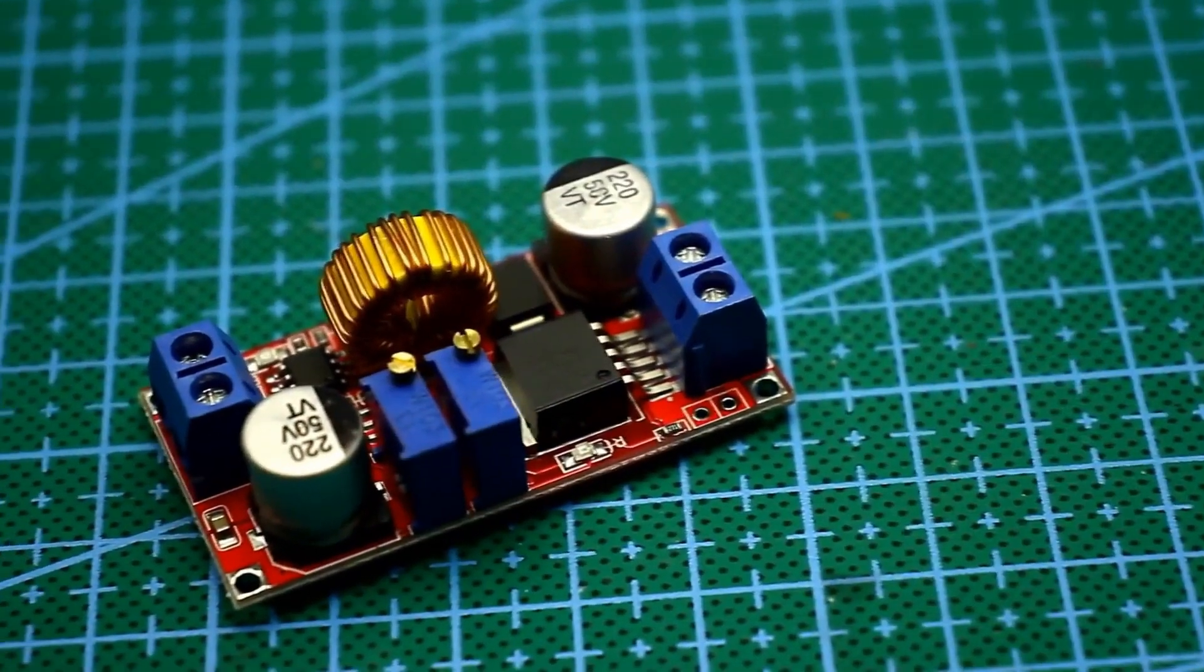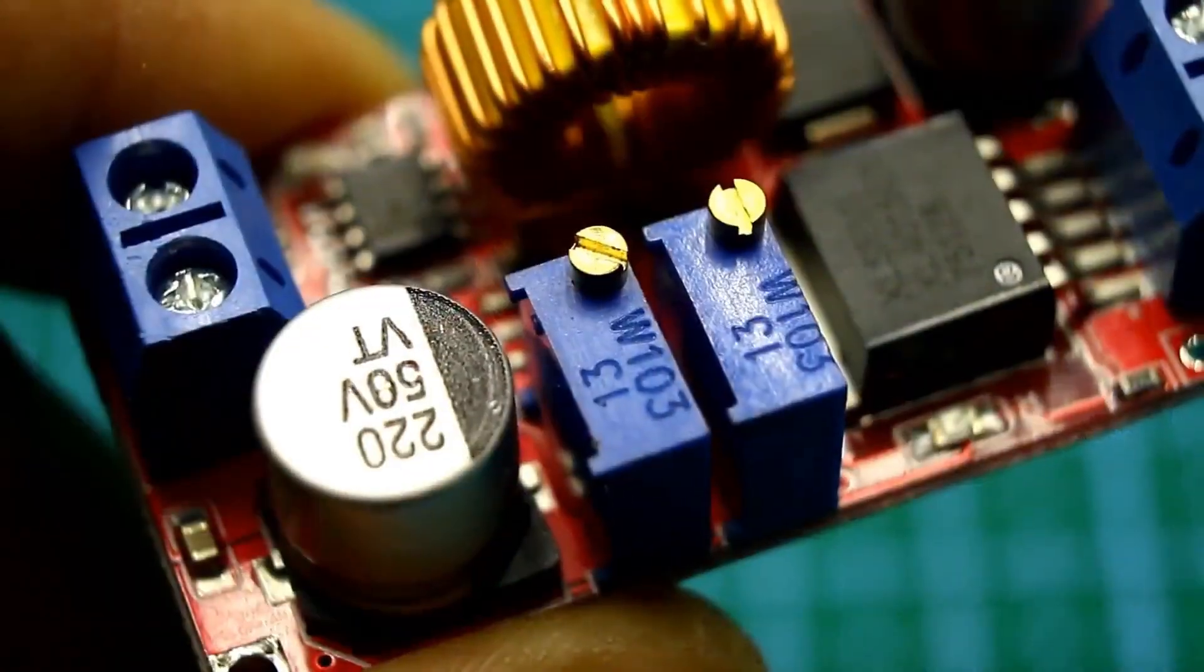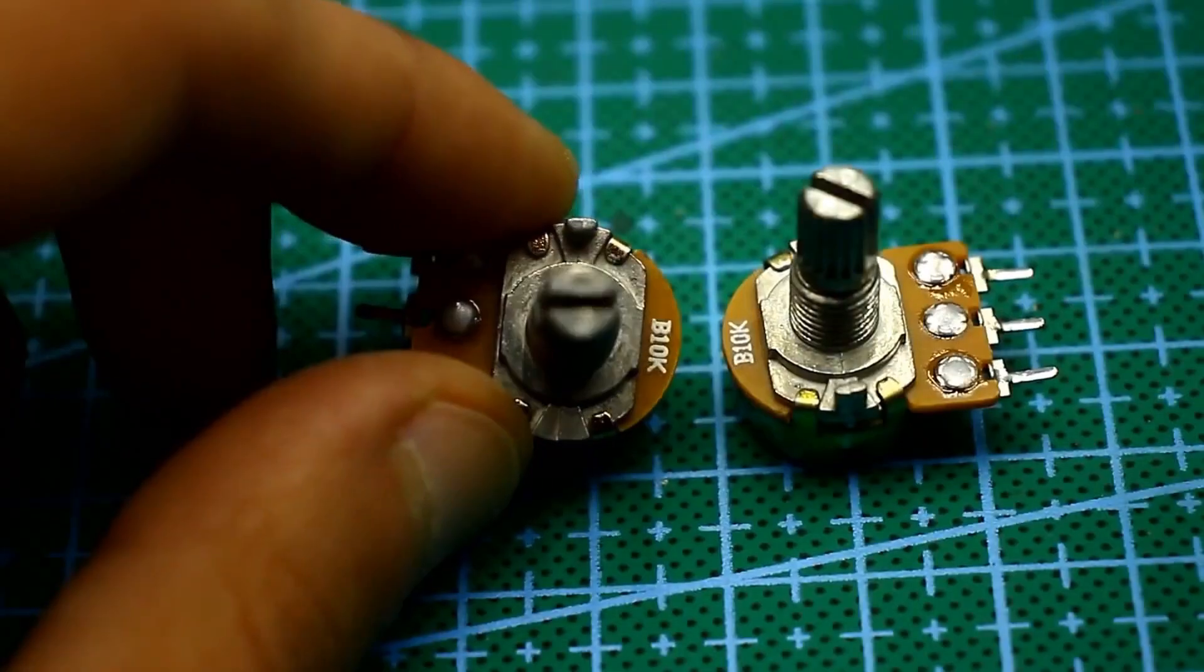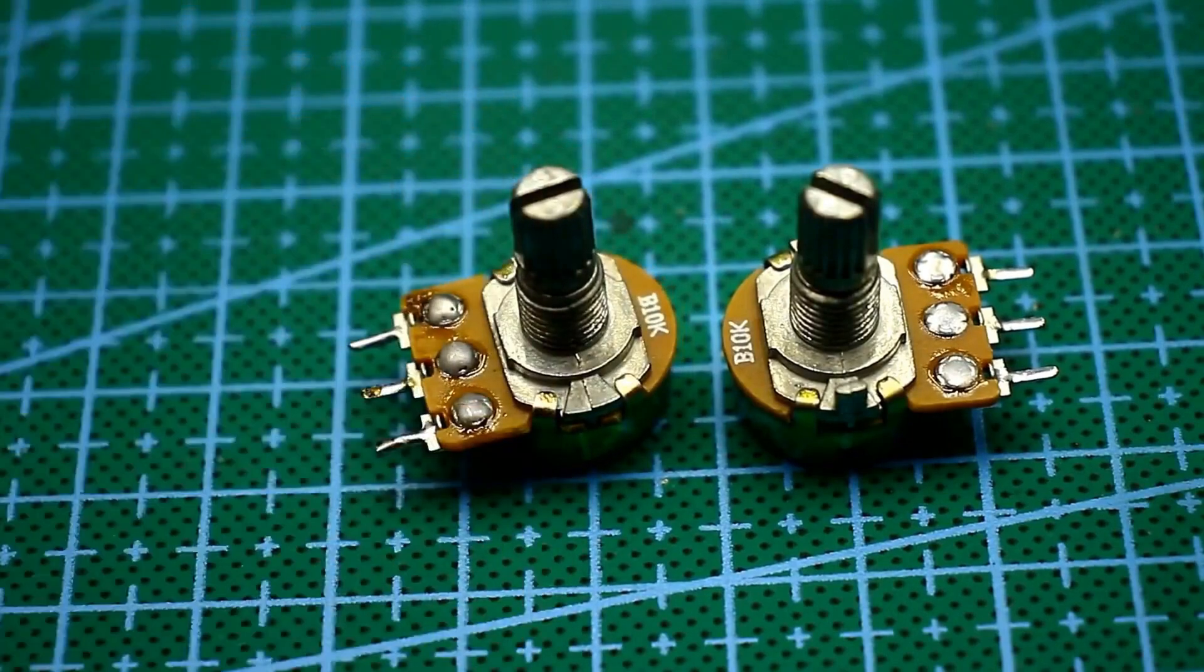On the stabilizer board, there are two multi-turn trimmer resistors of 10 kohm each for adjusting current and voltage. They were replaced with regular variable resistors of the corresponding resistance.